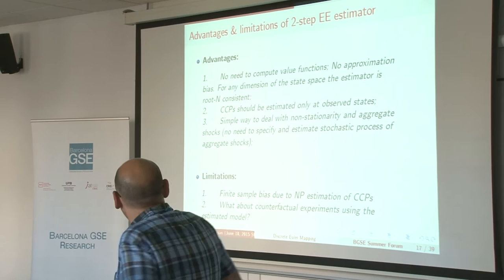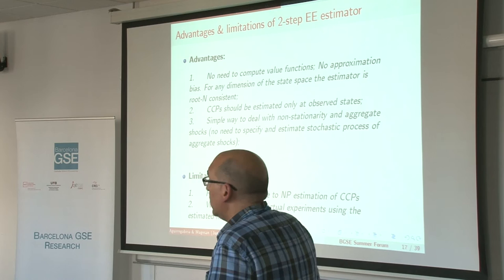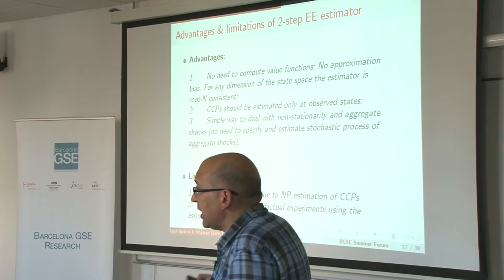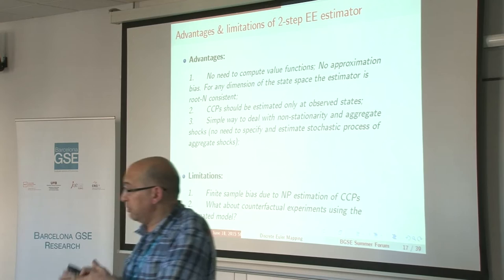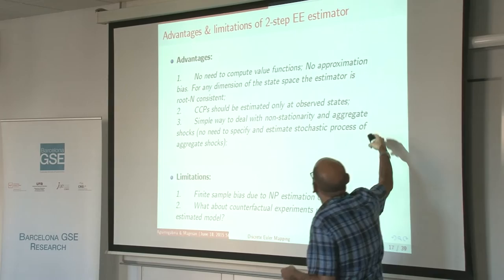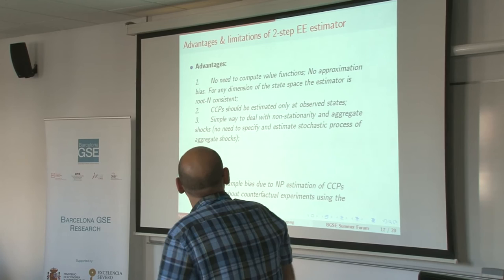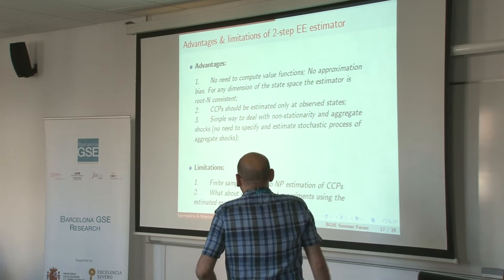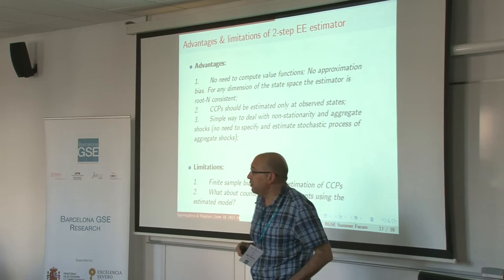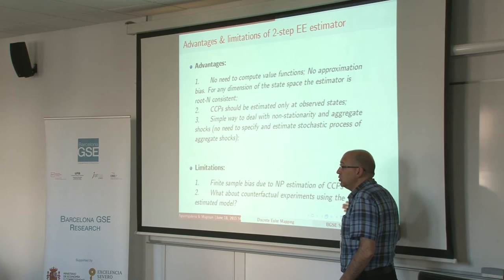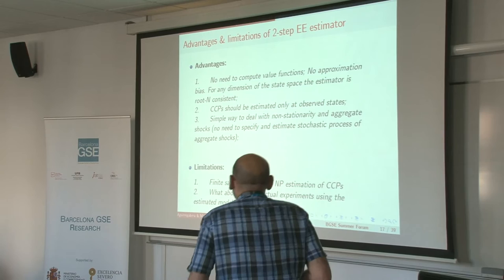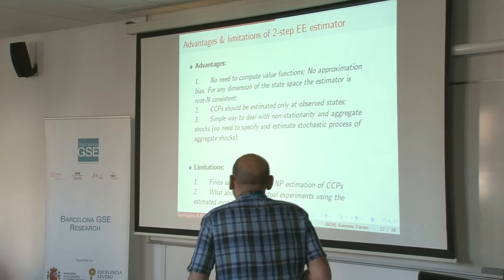The advantages of this method are: no need to compute value functions, no curse of dimensionality, the computational cost is the same regardless of the dimension of the state space, we need to estimate choice probabilities only at states visited in the data at period T and T+1, and simple handling of non-stationarity. Limitations include: finite sample properties may be imprecise if the state space dimension is large, and the problem of what to do when we want to make counterfactual experiments using the estimated model. These limitations motivate the next part of the paper.